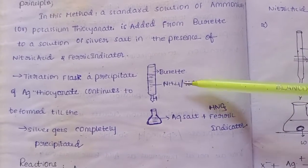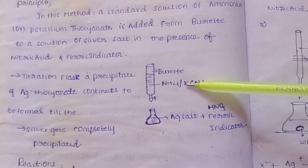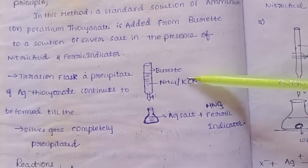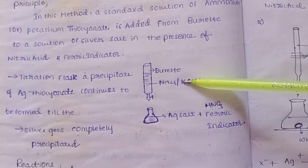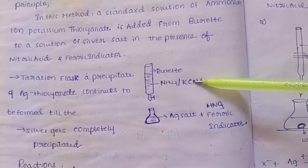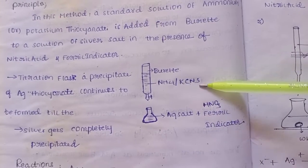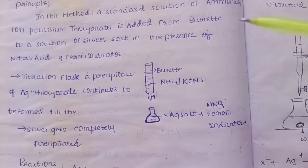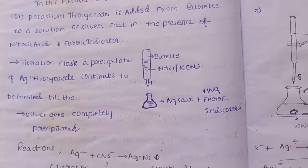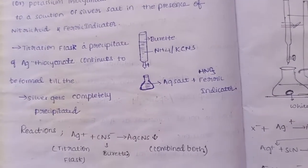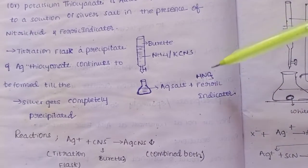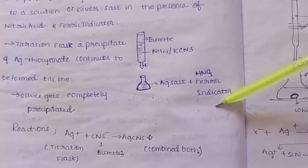Remember: potassium thiocyanate — K is potassium, SCN is thiocyanate, where S is the sulfur group. In the conical flask, we have silver salt, HNO3, and a ferric indicator. The thiocyanate solution is added from the burette.